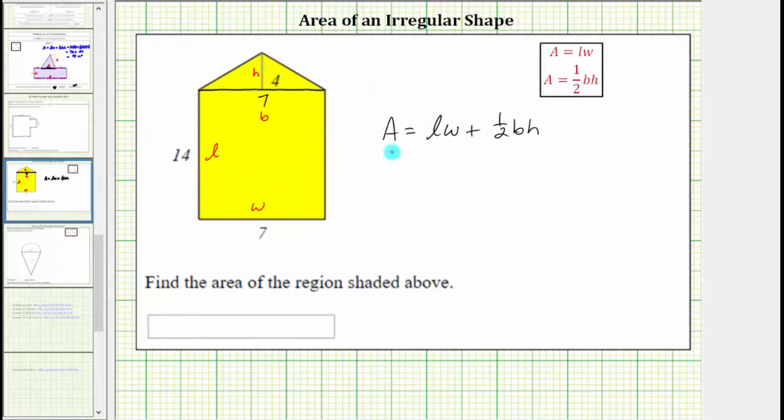Therefore, the area of the pentagon is equal to length times width of the rectangle is 14 units times seven units, plus the area of the triangle, which is one-half times the seven units, times the height of four units.